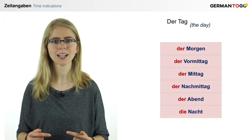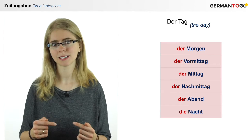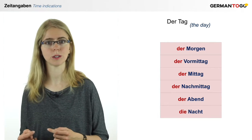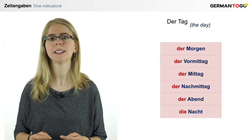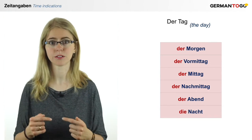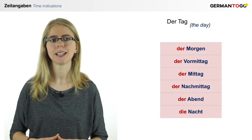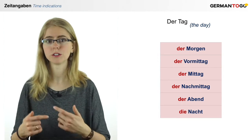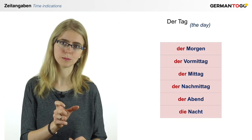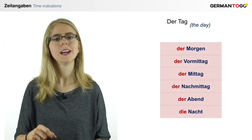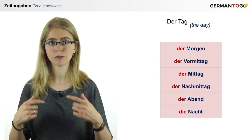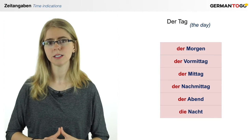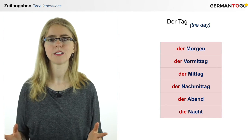Then we have Mittag. Mitt comes from Mitte — the middle. We saw that in Mittwoch as well, which was the middle of the week. Now we have Mittag, the middle of the day. Then der Nachmittag — nach means after, so it's the afternoon. Vor means before and nach means after: Vormittag and Nachmittag. Der Abend is the evening, and die Nacht is the night.